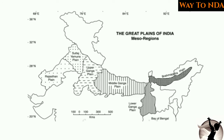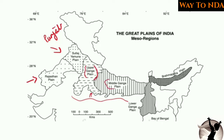On the map you will find the Rajasthan Plain, then the Punjab Plain also called as Satlaj-Yamuna Plain, then the Ganga Plain divided into upper, middle and lower Ganga, and then the Brahmaputra Plain. The plains are mainly divided on the basis of the rivers which are flowing in that area.